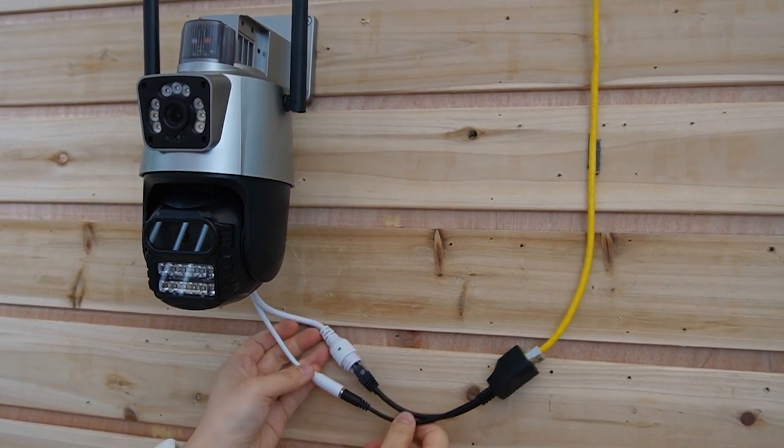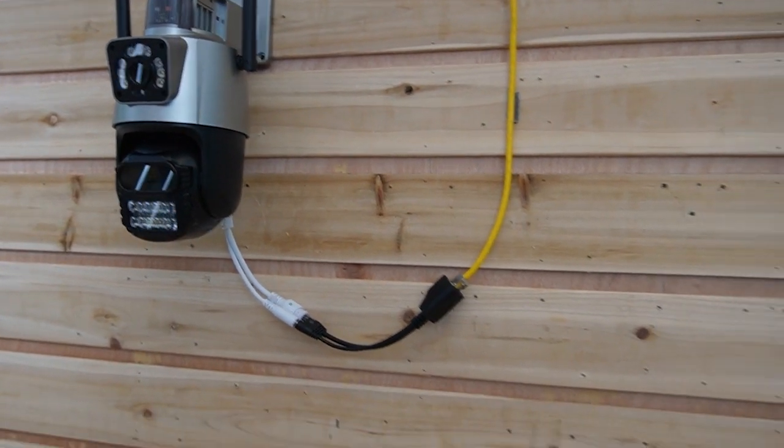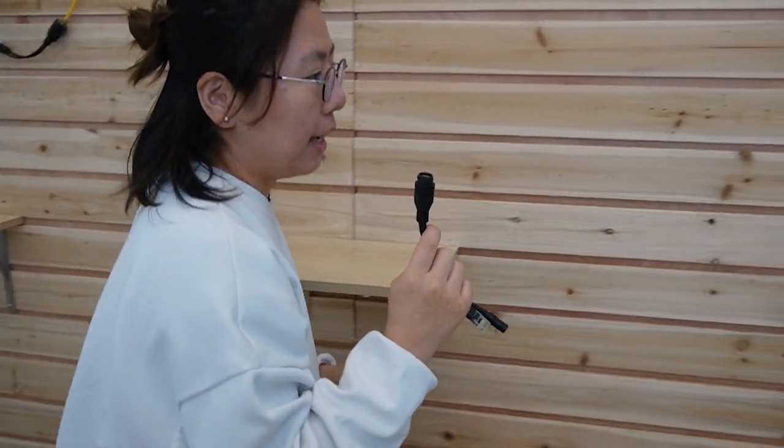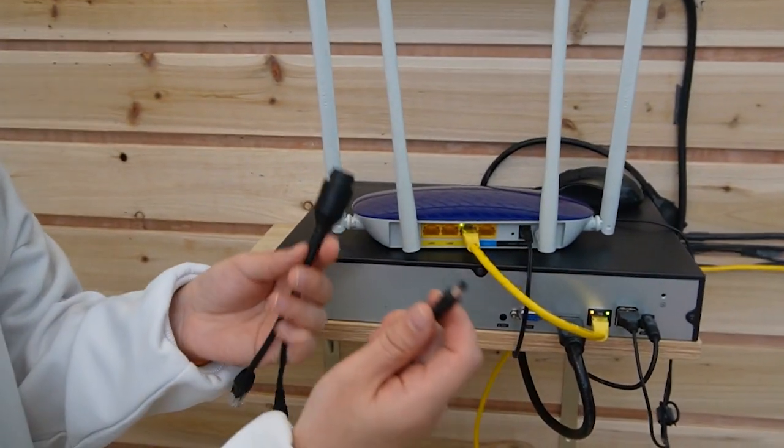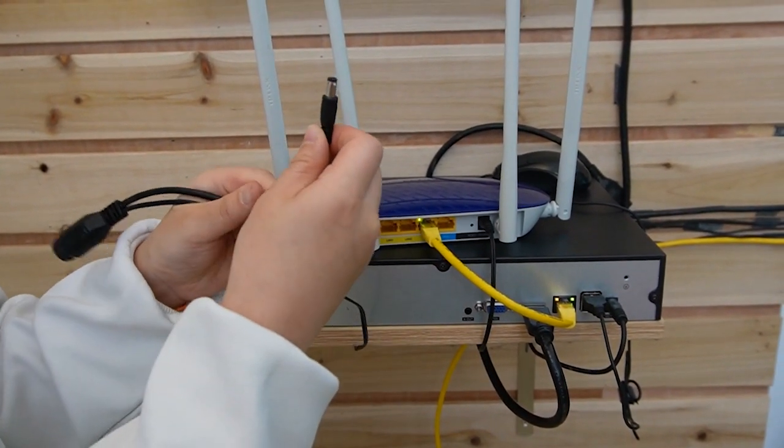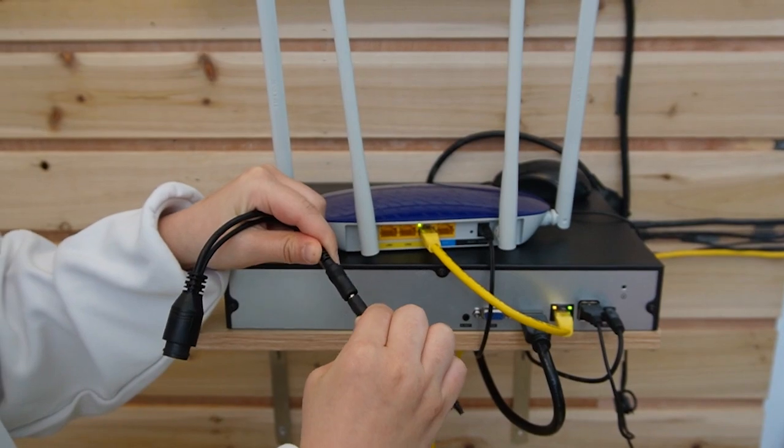All right, now let's move over to the modem side and connect the other pair of splitter. And we are going to connect the power. Let's plug it in here.